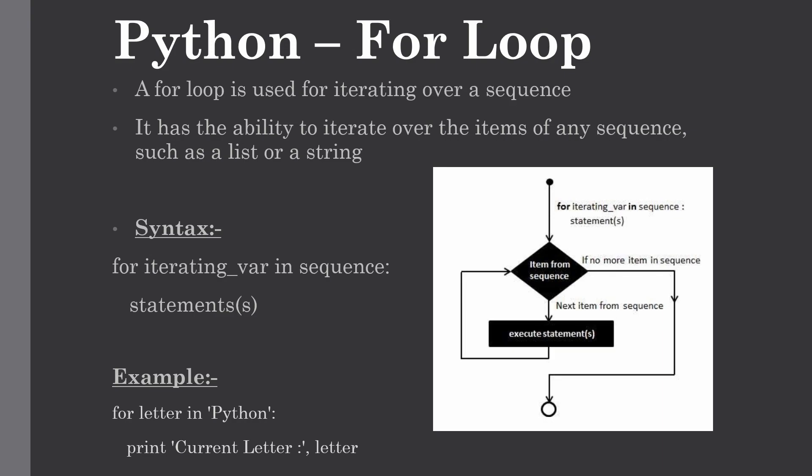A for loop is used for iterating over a sequence. It can be either a list, a tuple, dictionary, set, or a string. This is less like a for keyword in other programming languages and works more like an iterator method as found in other object-oriented languages.